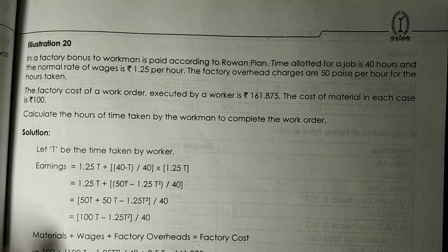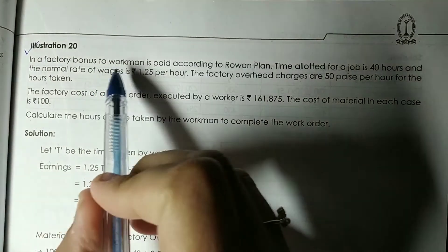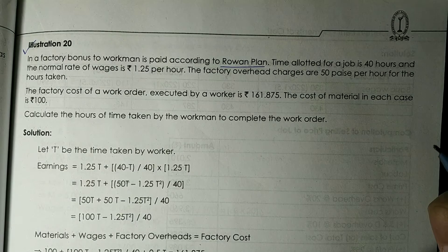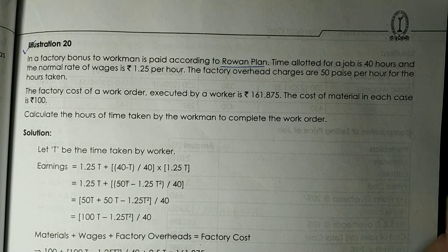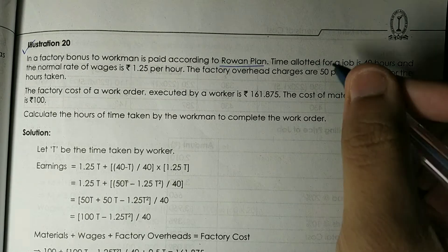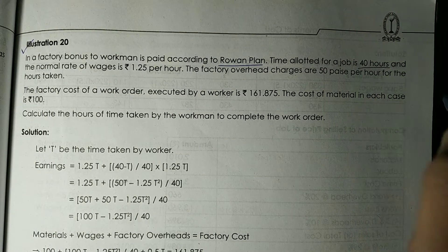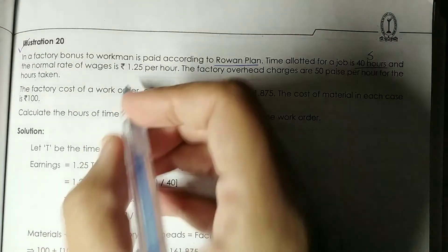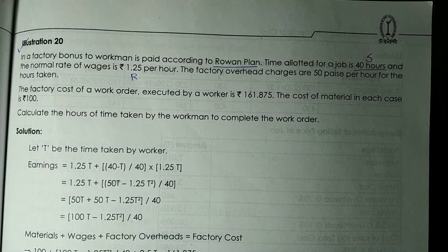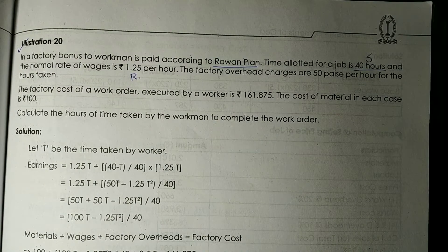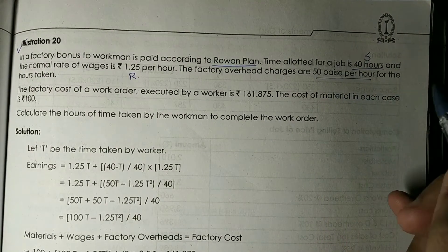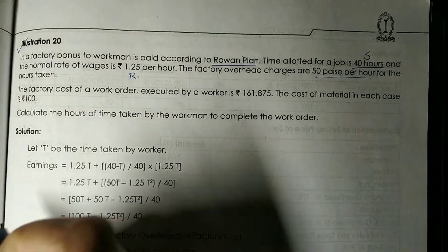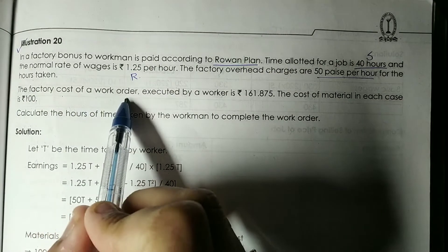Illustration number 20: In a factory, bonus to workmen is paid according to the Rowan Plan. The Rowan Plan formula is: (Standard Hours minus Actual Hours Worked) divided by Standard Hours, as a proportion. Time allotted for the job is 40 hours (standard hours = 40), normal rate of wages is Rs. 1.25 per hour, and factory overhead charges are 50 paise per hour for hours actually taken.